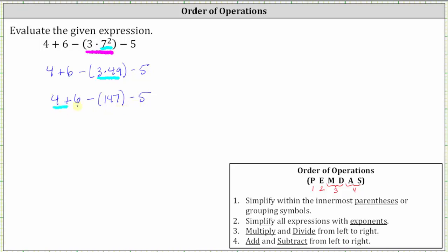For the next step, four plus six is 10. The given expression simplifies to 10 minus 147. Again, the parentheses around the 147 are optional. And then we still have minus five.